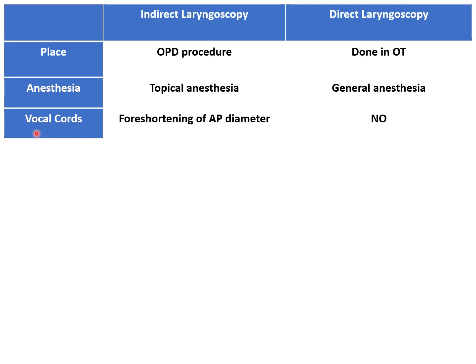The vocal cords are seen as foreshortened in AP diameter in indirect laryngeal examination — that is, they seem to be a bit shorter than they actually are. While in direct laryngeal examination, there is no such thing; the vocal cords are seen in their actual length.